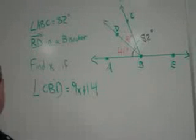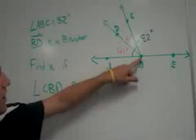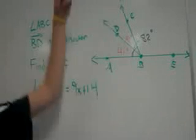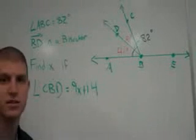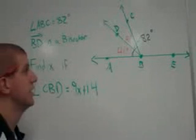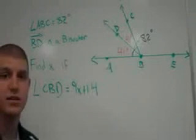But then, we totally mix it up by saying that ray BD is an angle bisector. Remember that an angle bisector is going to cut an angle into two congruent pieces. What that means is that each of these smaller angles are going to have the exact same measure.